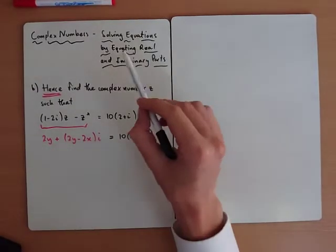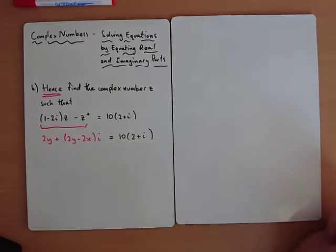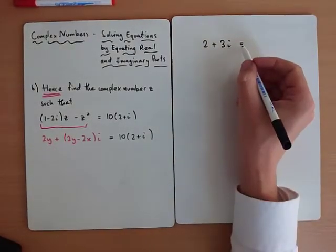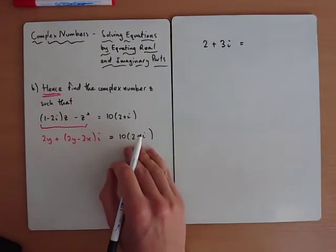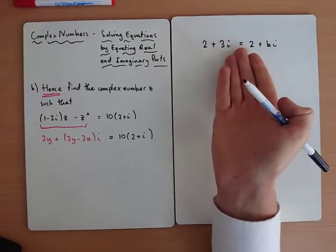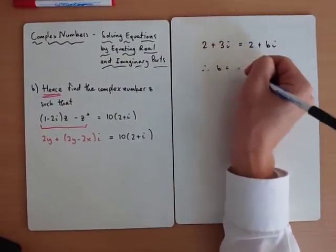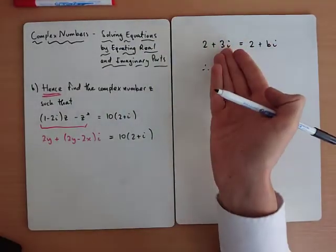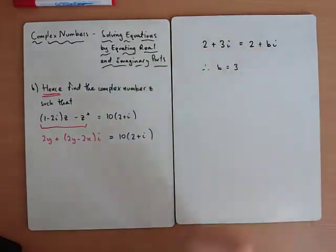The technique is called equating real and imaginary parts. As a simple example: if two plus three i equals two plus Bi, that equal sign means both sides are the same, so B must be three. You've looked at the imaginary part on the left and the imaginary part on the right and said they must be equal. The real part on the left must equal the real part on the right — that's all the technique means.